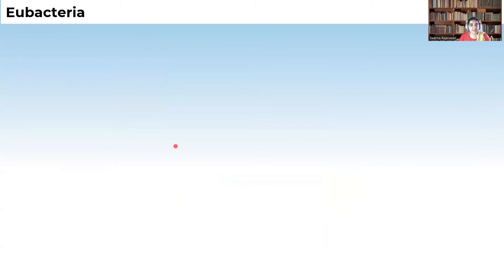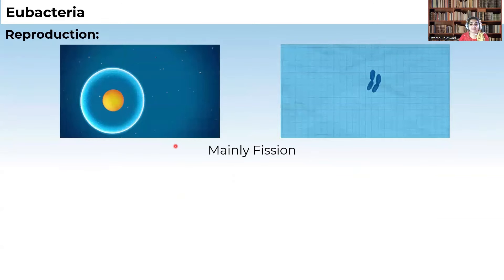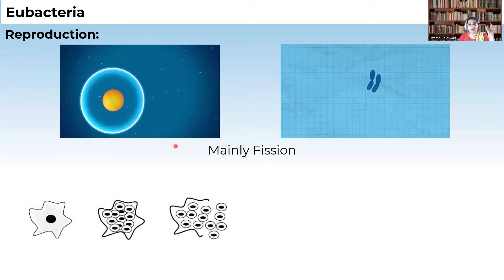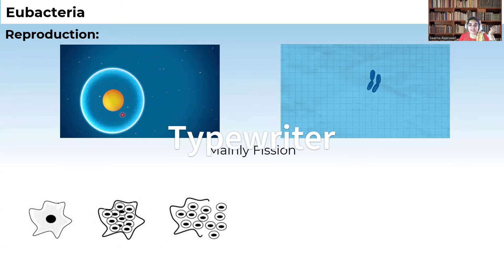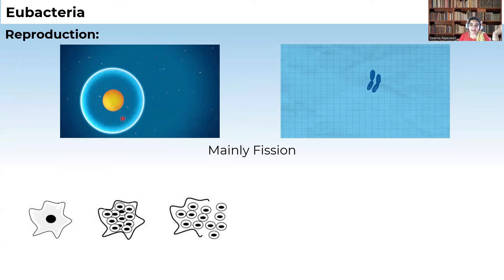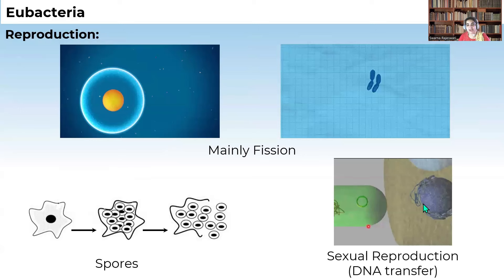Coming to reproduction in bacteria — bacteria reproduce mainly by fission, where one organism splits into many by binary fission. First the nucleus splits, followed by division of the cytoplasm, and the cytoplasm surrounds each daughter nucleus forming small daughter organisms. When many daughter organisms are formed from a single parent, we call it multiple fission. Binary fission and multiple fission are the main asexual reproductive methods. Some bacteria also show sexual reproduction by DNA transfer, and in some organisms reproduction is by formation of spores.